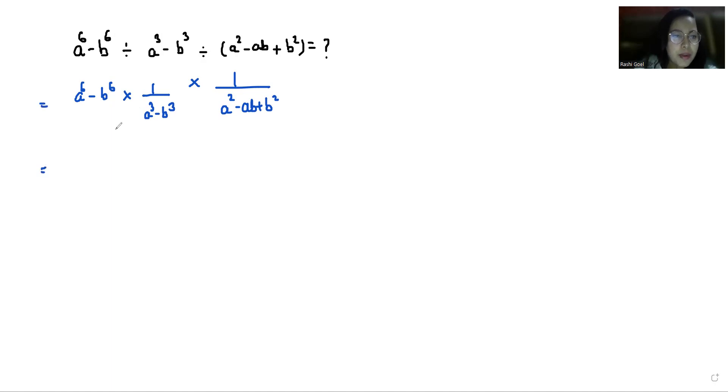So overall, if you multiply the numerator, it gives a^6 - b^6, and multiply the denominator: a^3 - b^3 times a^2 - ab + b^2.